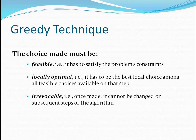A choice is said to be feasible when it satisfies the problem's constraints. It is said to be locally optimal when it is the best local choice among all feasible choices available at that particular step. And it is irrevocable, meaning once the decision is made, it cannot be changed in the subsequent steps of the greedy algorithm.